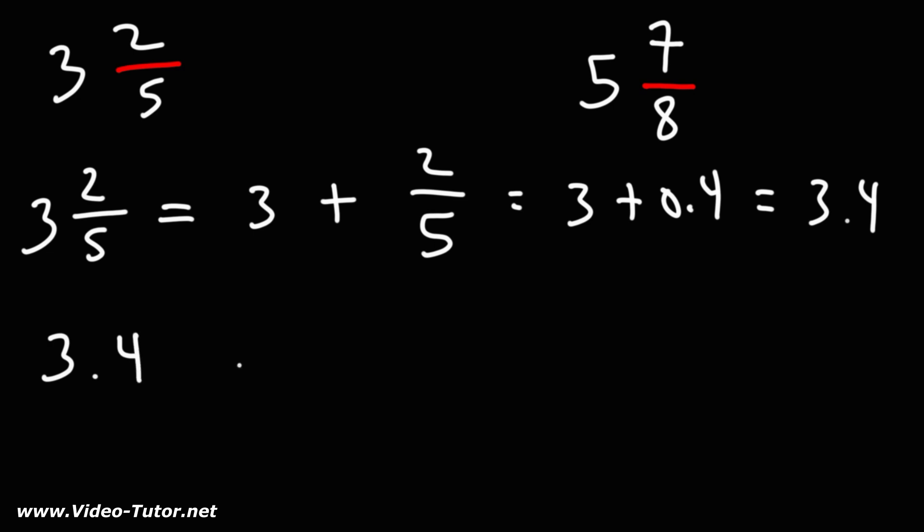Now we can convert this decimal number to a percentage by multiplying it by 100%. 3.4 times 100 is 340. So this mixed number is equal to 340%. That's the answer.